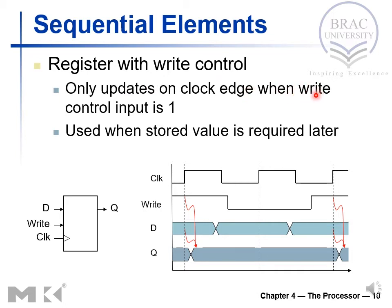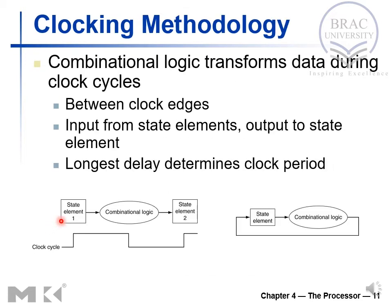Sequential element: register with write control. It only updates on the clock edge when the write control input is 1. We saw this in the general data path diagram — the control unit provides a register-write signal, and only when that register-write enable signal is active can we perform a write-back operation.